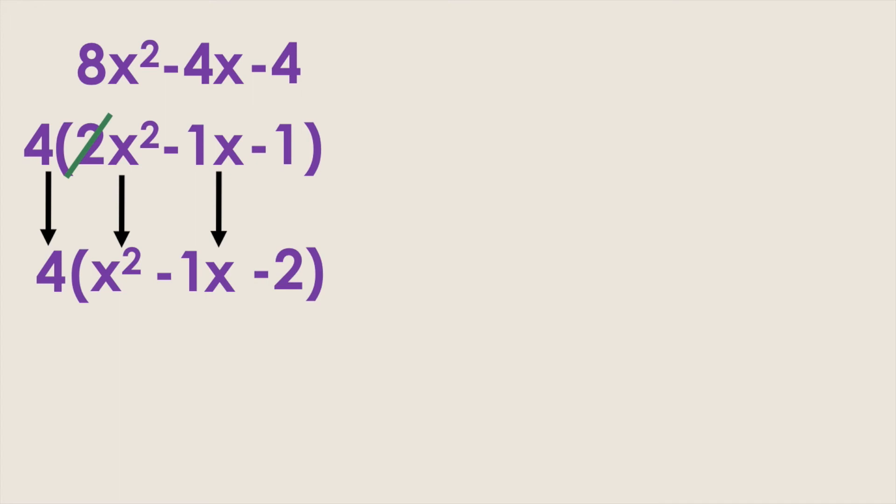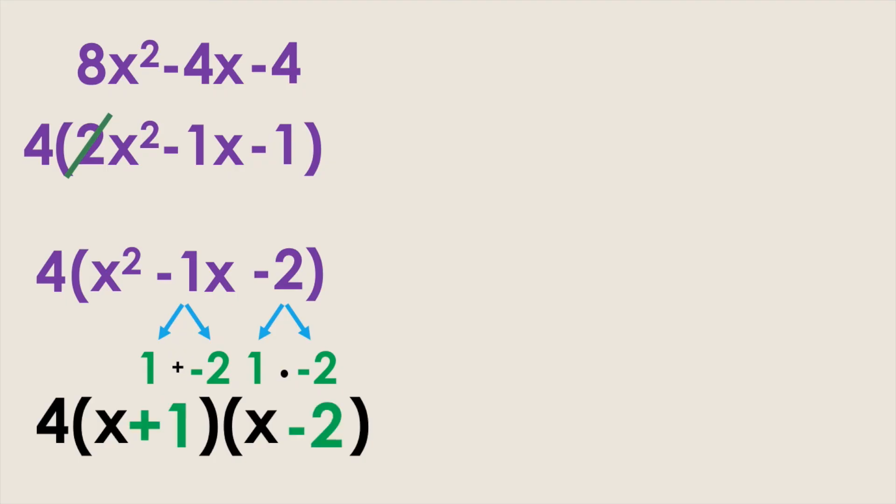Now we can factor the polynomial inside the parentheses. We need two numbers that multiply to give us negative 2 and those same two numbers should add to give us negative 1. Those numbers are 1 and negative 2. So we can factor this polynomial inside the parentheses as x plus 1 times x minus 2. Bringing down the 4 in front of the parentheses.